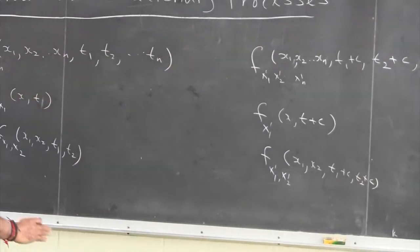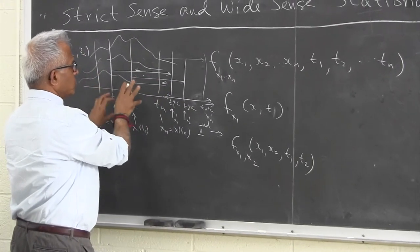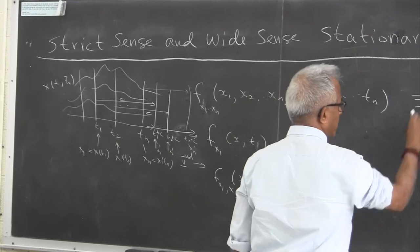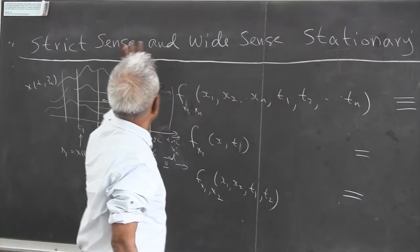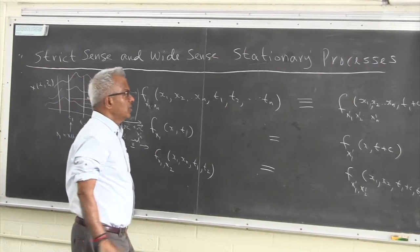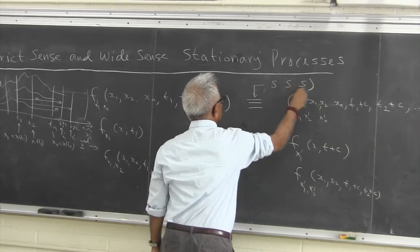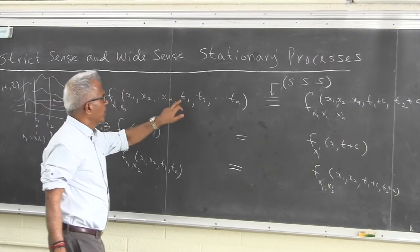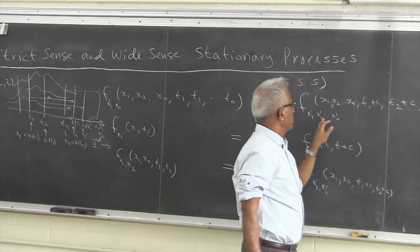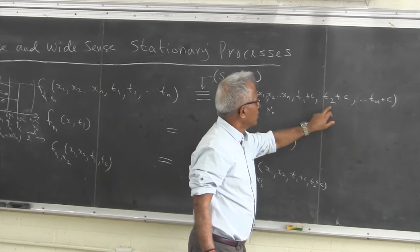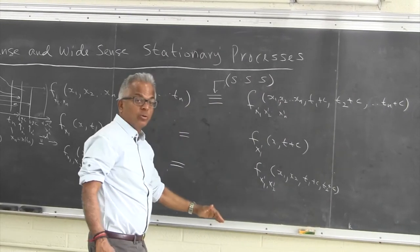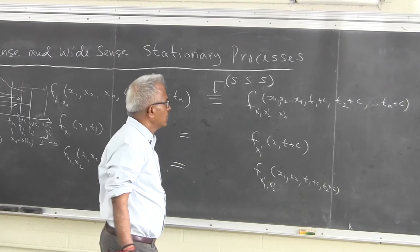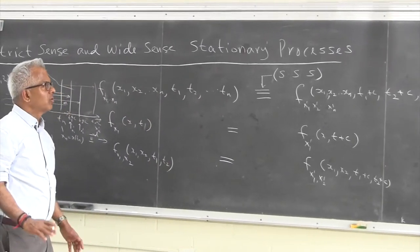What we mean by stationary is that if you shift everything by a constant, the joint behavior — represented through the joint density function — remains unchanged. If you have equality here, then we call the process to be strict sense stationary. That is, the joint distribution of x1 through xn at t1 through tn and the joint distribution of the new set of random variables at t1 plus c through tn plus c are identical for all values of n, all values of t1 through tn, and all values of c.